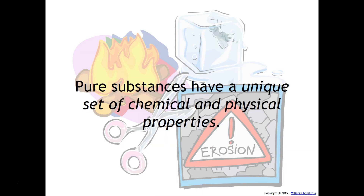Pure substances, if you remember, are going to be elements or compounds — something that has a finite ratio. For example, with water, that is H2O. There are always two hydrogens and one oxygen. And in a sample of copper, every single one of those atoms are going to be copper. So pure substances have unique sets of chemical and physical properties.